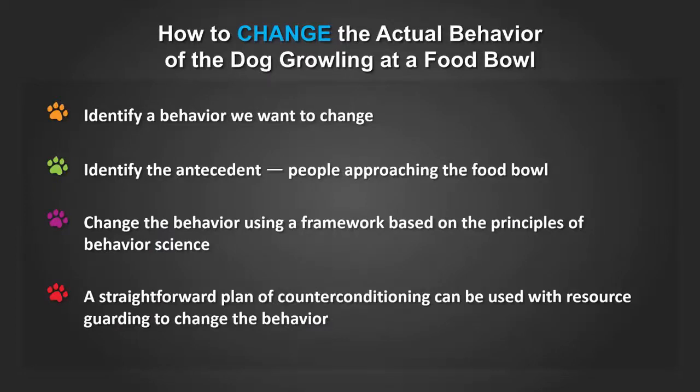When we can identify a behavior we want to change — in this case, growling — we can then identify the antecedents, in this case people approaching the food bowl, and change the behavior using a framework based on the principles of behavior science.